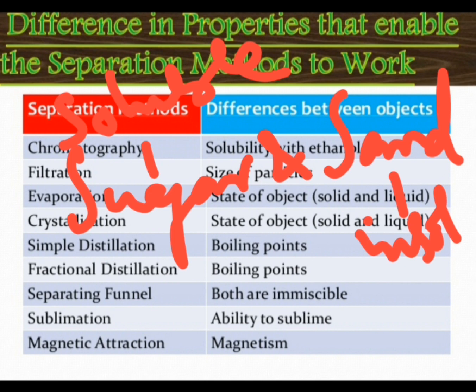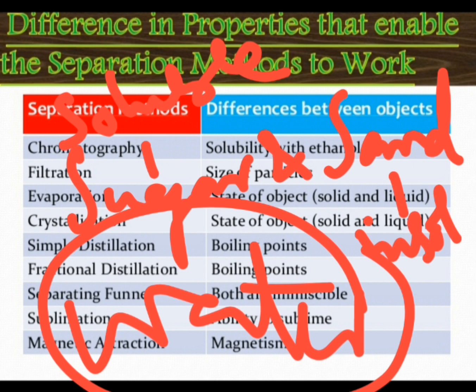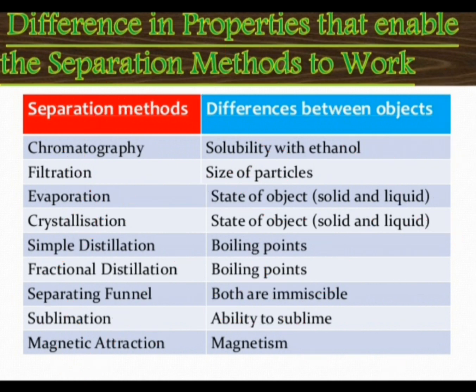After obtaining the filtrate of sugar solution, you can evaporate it — water gets evaporated and you are left with crystals of sugar. So the mixture of sugar and sand has been separated using water as a solvent. This method can only be chosen when there is a difference in the solubilities of the constituents — if both are soluble in the solvent, it won't work.